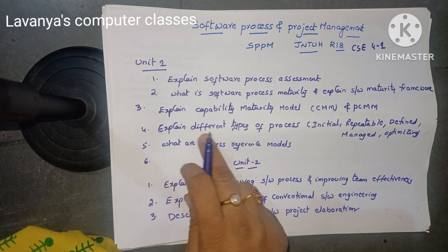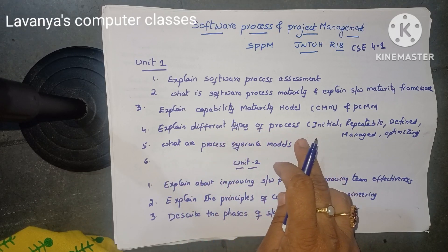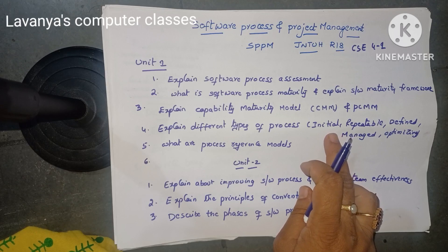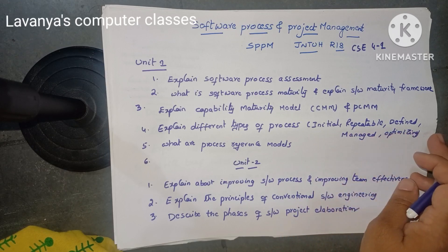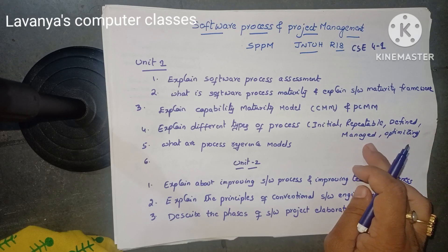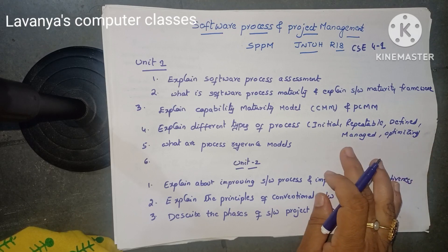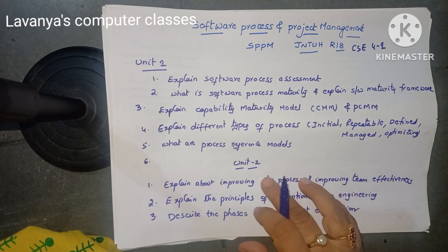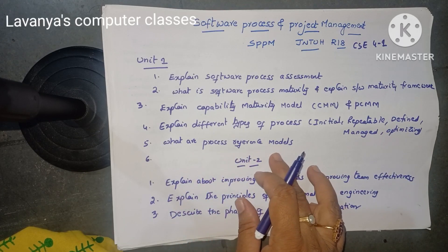Next one is: explain different types of processes. There are many — they are asking individually: explain about initial process, explain about repeatable process, explain defined process, managed process, optimizing process. Any one of these is asked in either short answer or long answer questions. Also: what are the process reference models?